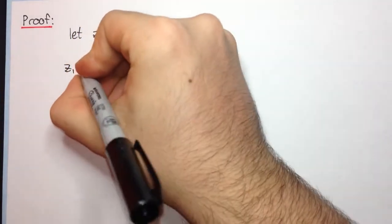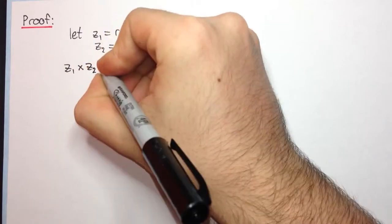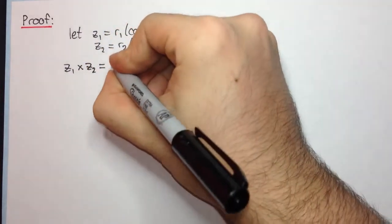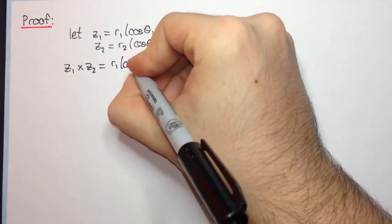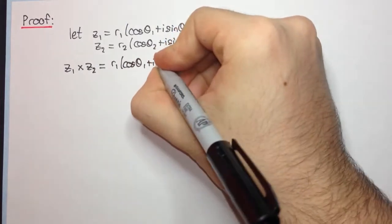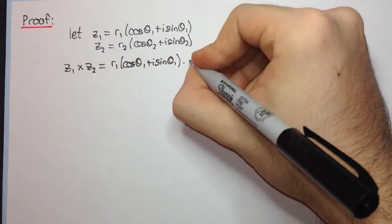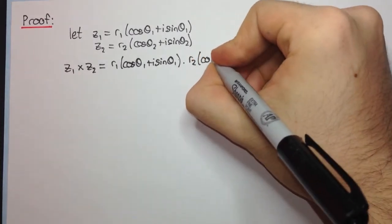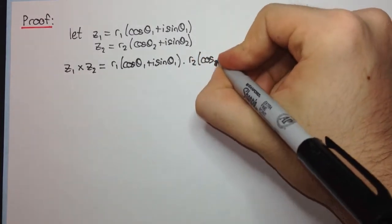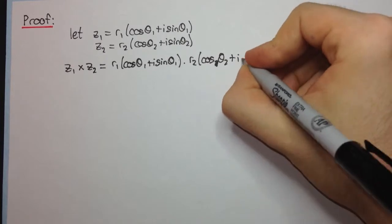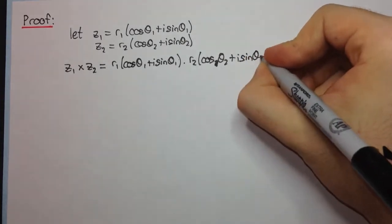Okay, and first of all we would like to have a look at z1 times z2. So that's going to be equal to r1 cos theta1 plus i sine theta1 times r2 into cos theta2 plus i sine theta2.